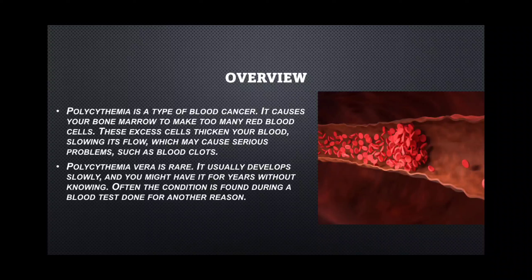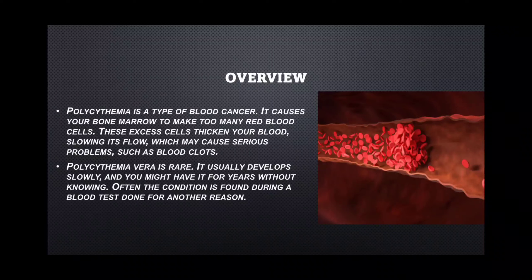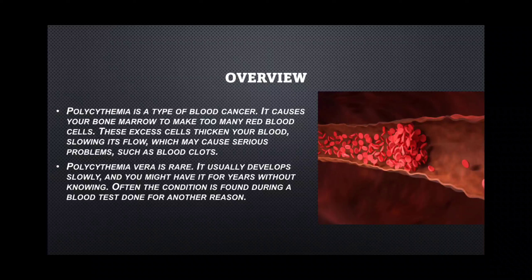Polycythemia vera is a very rare condition. It usually develops very slowly and you might have it for years without any symptoms. It is mostly seen in older people around 60 or above, but it can also be present in adults like those in their 30s or 40s without showing any symptoms, because our body tries to compensate by destroying the excess erythrocytes. Often this condition is found during a blood test done for another reason.